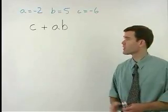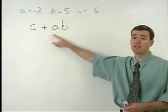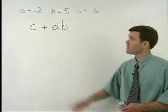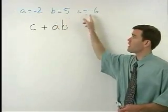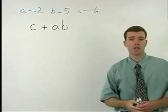In this problem, we're going to evaluate C plus AB, knowing that A equals negative 2, B equals 5, and C equals negative 6.